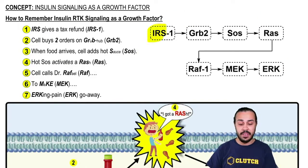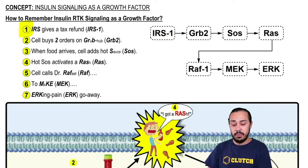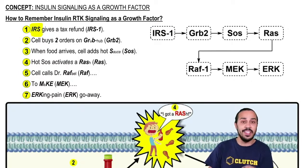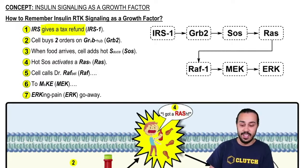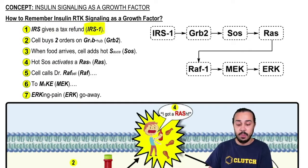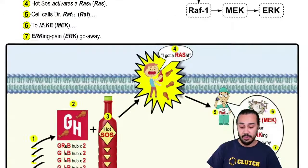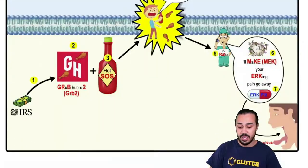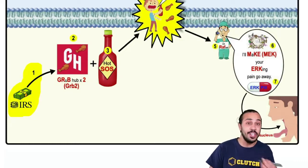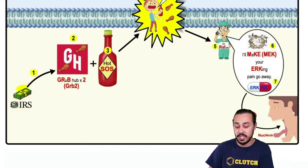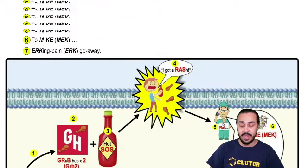Because this pathway starts off with activated IRS1, the first step of our story is that the IRS — the Internal Revenue Service — gives another tax refund. That represents IRS1. In the image, step 1 is this cash influx or tax refund that the IRS is providing.